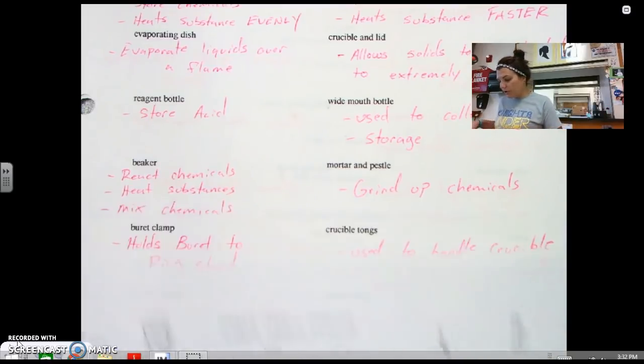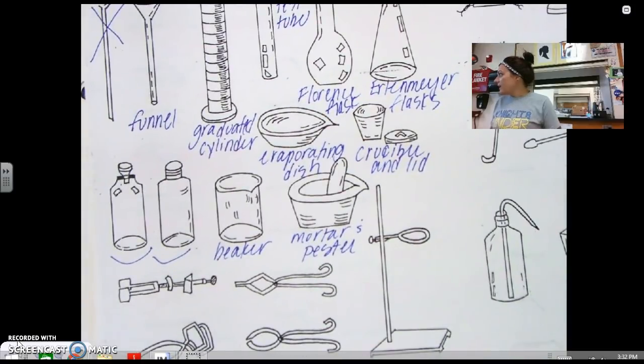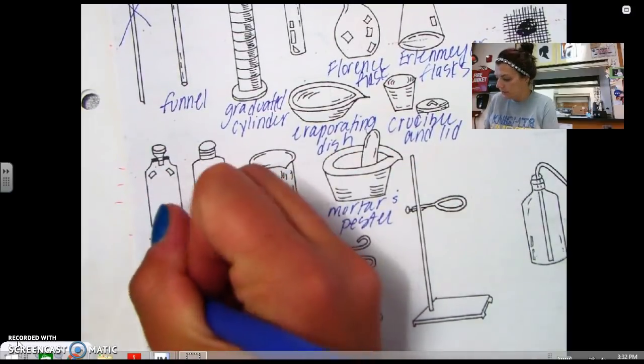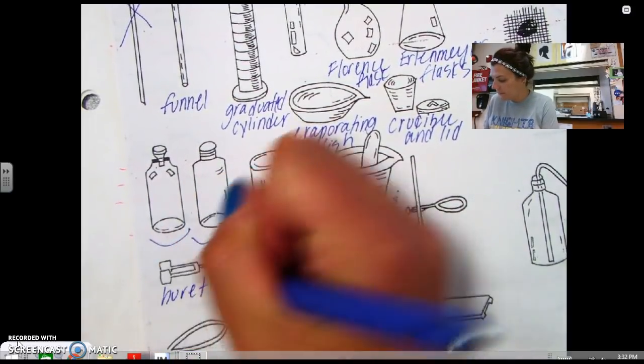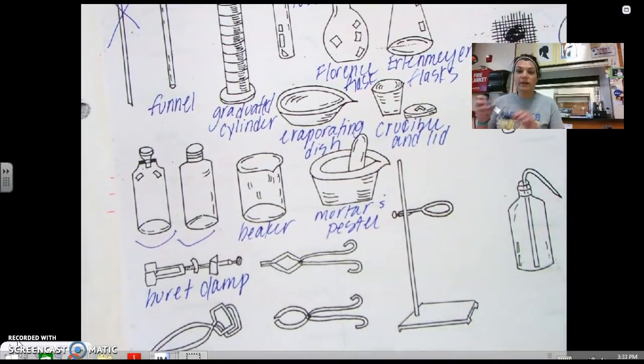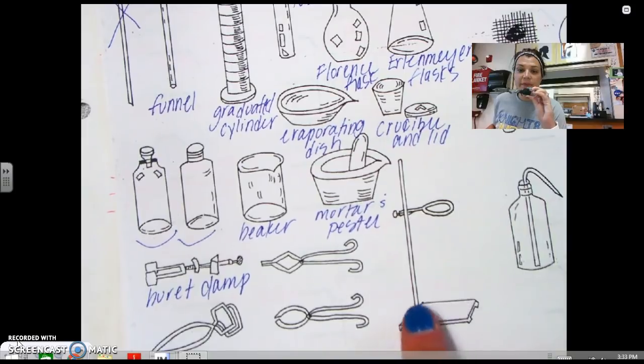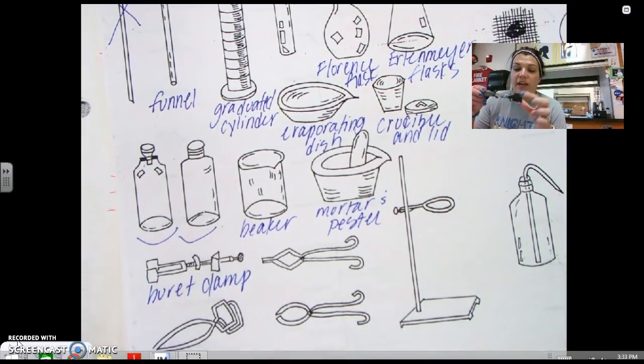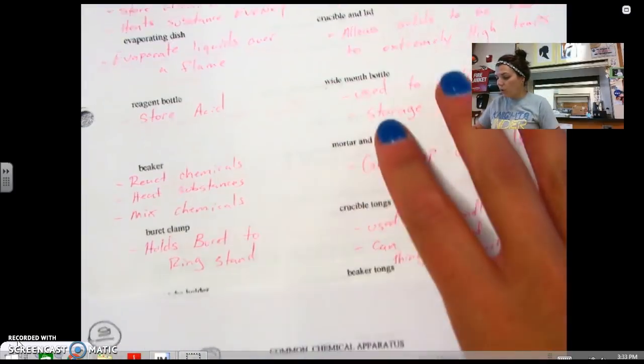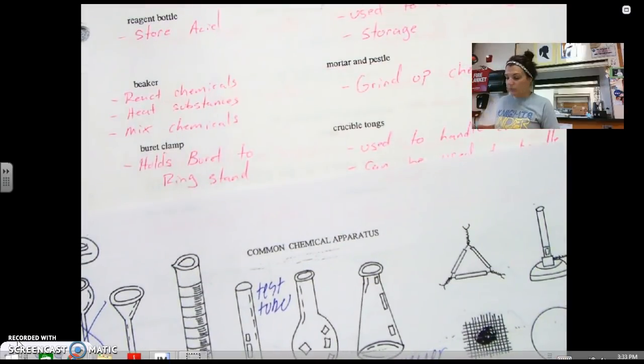The next thing is a burette clamp. Now this one is a little bit different. Burette clamp. And obviously if it's a burette clamp, it's going to hold a burette. And we're going to get to this guy here in a second. But this is what it would go on to. And ultimately a burette would be able to fit inside of this. So obviously a burette clamp holds a burette to a ring stand, which we'll get to a ring stand here in a second.